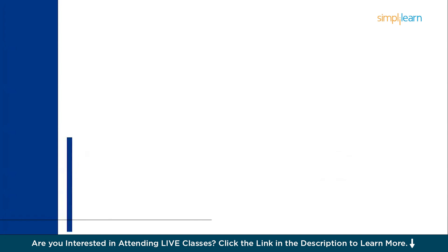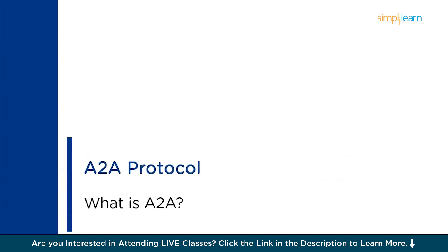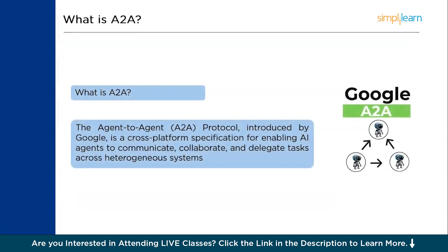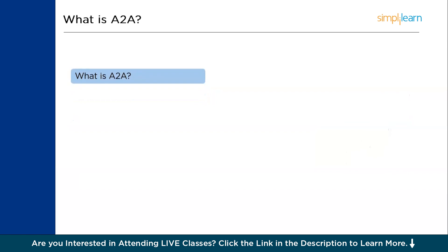So what exactly is the A2A protocol? An agent-to-agent protocol, introduced by Google, is a cross-platform specification for enabling AI agents to communicate, collaborate, and delegate tasks across heterogeneous systems. Let's uncomplicate this with a small example.